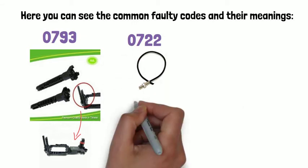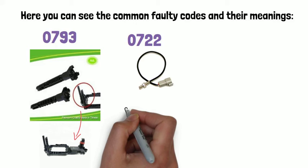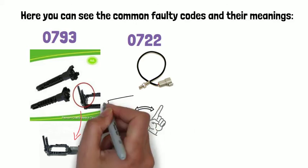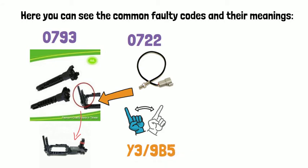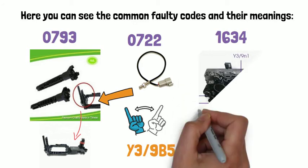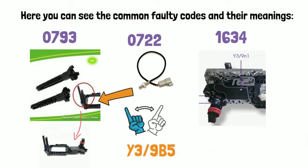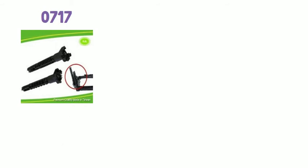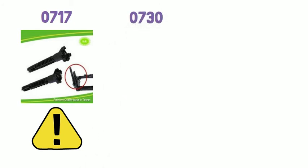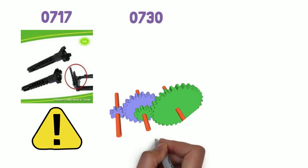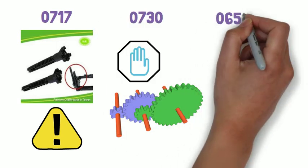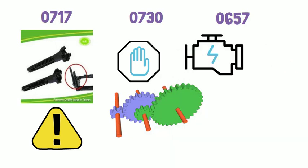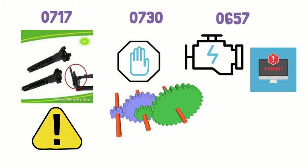Code 0722 means the RPM signal from the output RPM sensor is not available, and you need to replace component Y39B5, the CVT output RPM sensor. Code 1634 means component Y39N1 CVT is defective or the voltage supply is under voltage. Code 0717 means the RPM signal from the CVT output RPM sensor is not available. Code 0730 means the gear ratio in CVT is not permissible, and code 0657 means the voltage supply of the control solenoid valves in the CVT has failed.